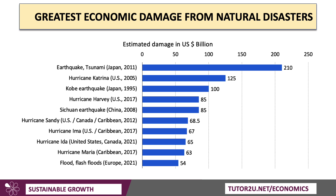This chart shows the greatest economic damage from natural disasters. The tsunami and earthquake in Japan in 2011 is widely regarded as having the biggest economic impact, with damage in excess of $210 billion. Hurricanes, earthquakes — including quite a few in China and in the Caribbean — and flash floods in Europe in 2021: these major environmental events have a huge economic as well as social and human cost.